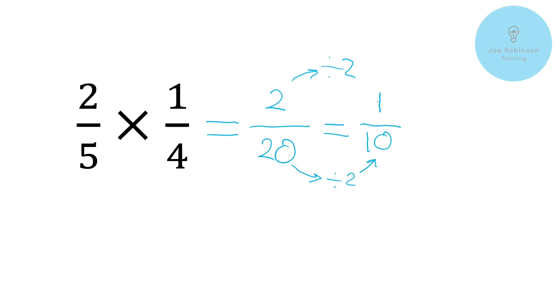So there we go. That is the answer simplified. We can't get any simpler than that one tenth because obviously one is the smallest whole number that we've got in our kind of arsenal here. Okay so two fifths times one quarter is actually one tenth by way of two twentieths.